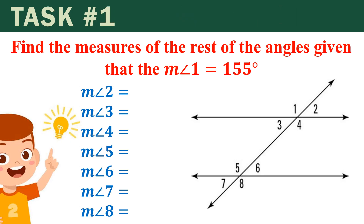Now let's have the first task: find the measures of the rest of the angles given that the measure of angle 1 is 155 degrees. Before we proceed, it would be better for us to focus first with the illustration. So we have 155 degrees here, and from this given angle measure, we can apply different or various angle relationships.